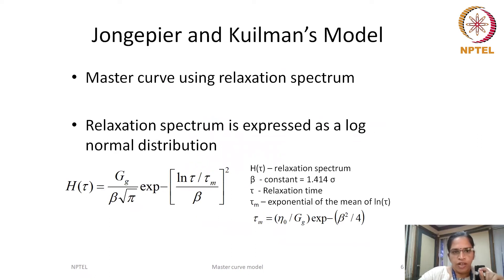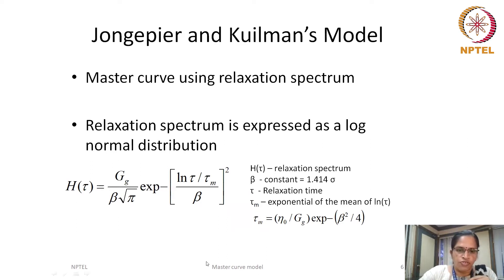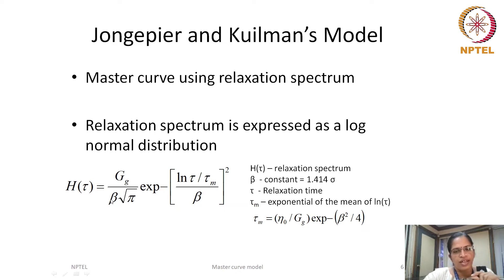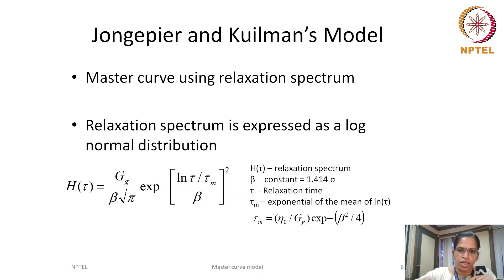The next model is John Gepiere and Kuhlman's model. For this master curve expression, he used a relaxation spectrum, first defining it for bitumen as a log normal distribution. The form of the relaxation spectrum H(τ) depends on glassy modulus GG, relaxation time τ, and constants beta and tau M. Beta is related to the standard deviation sigma, and tau M is related to the mean of the logarithm of relaxation time τ. Tau M takes a specific mathematical form as described in the expression.